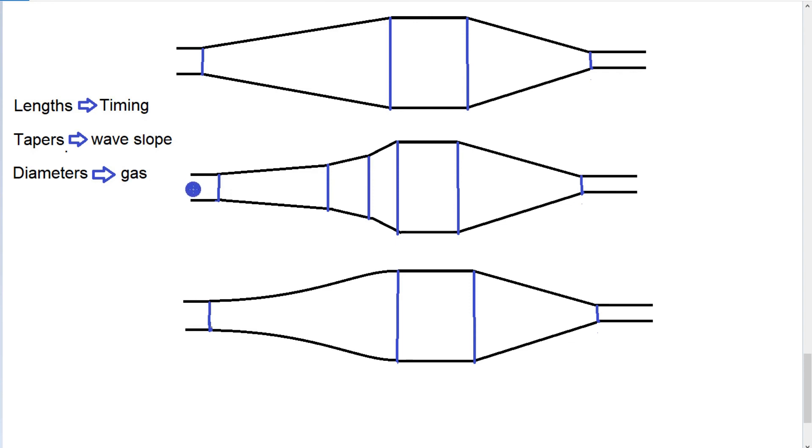Now if we were designing our own pipe, we would have to include the porting. All these dimensions are taken from the relationship to the port window, okay.